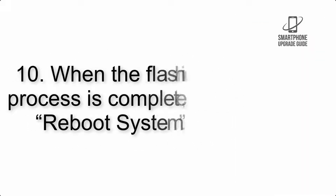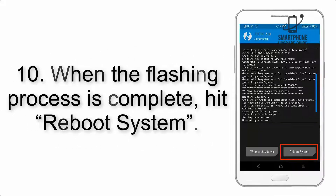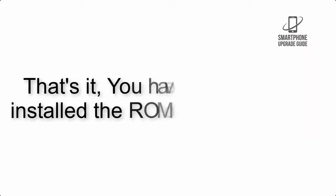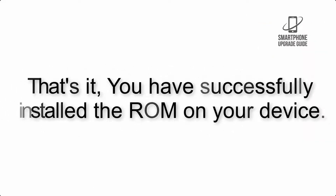Step 9: After GApps flashing completes, select Wipe Cache and Dalvik from the bottom left side of the screen and swipe to wipe. Step 10: When the flashing process is complete, hit Reboot System. That's it — you have successfully installed the ROM on your device.